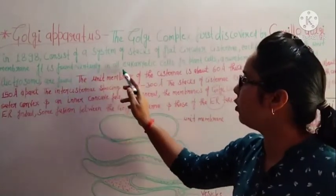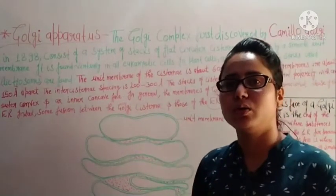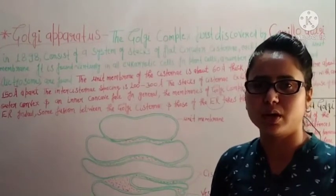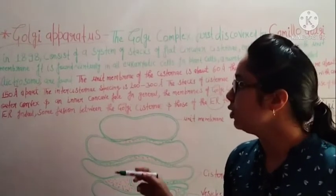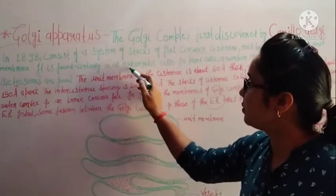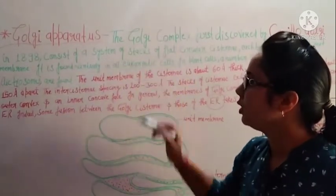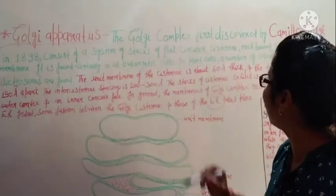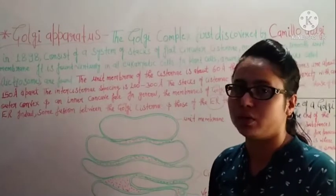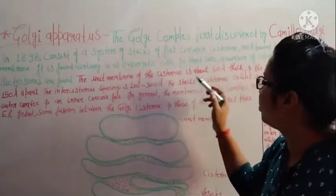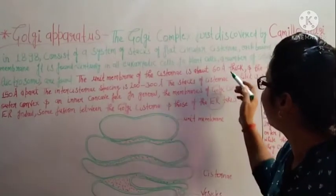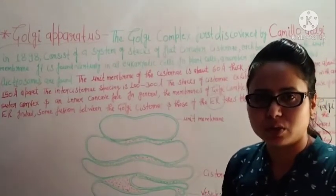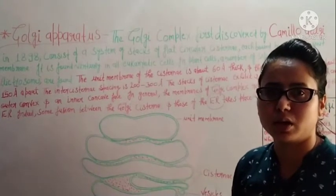The Golgi body is found virtually in all eukaryotic cells. In plant cells, a number of separate stacks called dictyosomes are found. So in plant cells, when it is present as separate structures, we call them dictyosomes.